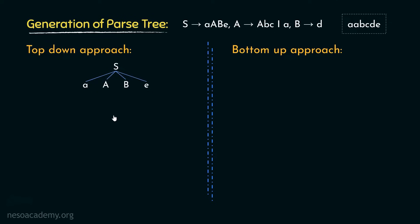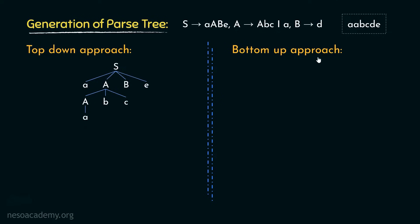Coming back to our parse tree, we have two more non-terminals: capital A and capital B. A can be rewritten as capital A followed by small b, small c — or A can be rewritten as small a. B can be rewritten as small d. Since the string also has b and c in the middle, we apply the production A → Abc, deriving capital A followed by small b, small c, covering those terminals.